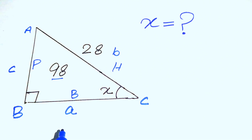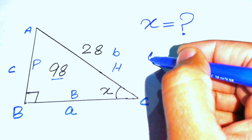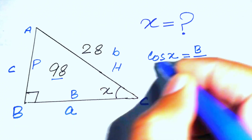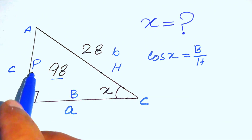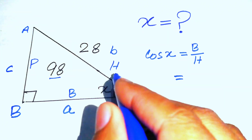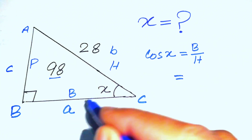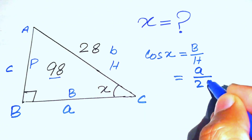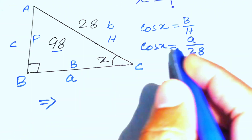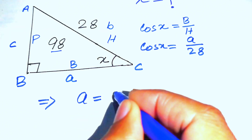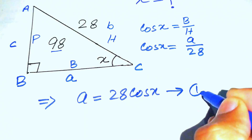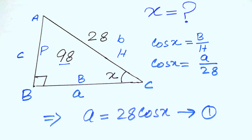Now we use trigonometric ratios defined in a right triangle. We define cos(x) as base over hypotenuse. In our diagram, the base is denoted by small a and the hypotenuse is 28, so cos(x) = a/28. Rearranging, we get a = 28·cos(x). We call this Equation 1.